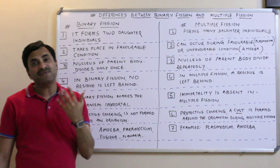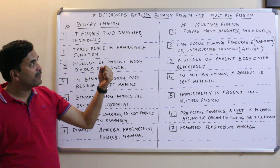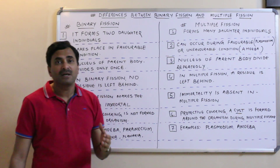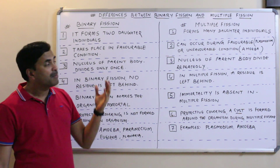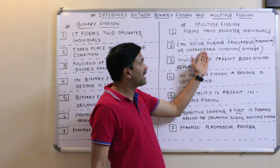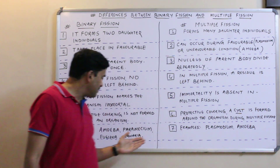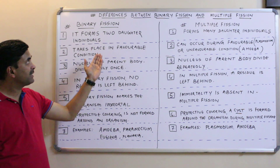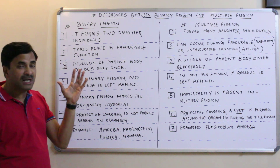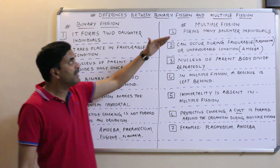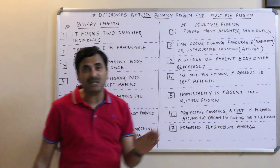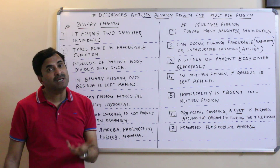Many books say that multiple fission always occurs in unfavorable conditions — that is not true. Multiple fission can occur in unfavorable conditions; for example, in amoeba, when conditions are unfavorable, multiple fission occurs, and when conditions are favorable, binary fission occurs. But multiple fission can also occur in favorable conditions, as seen in plasmodium, where multiple fission occurs in favorable conditions.